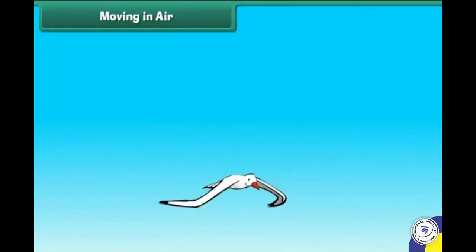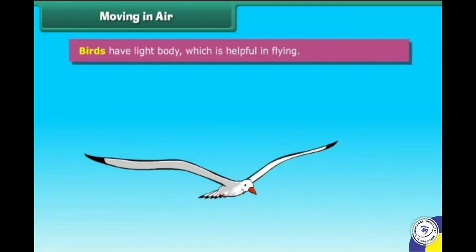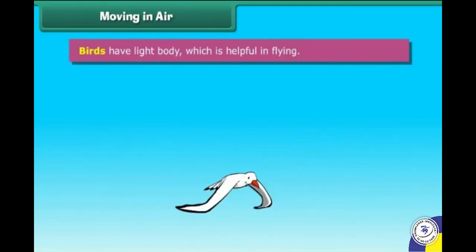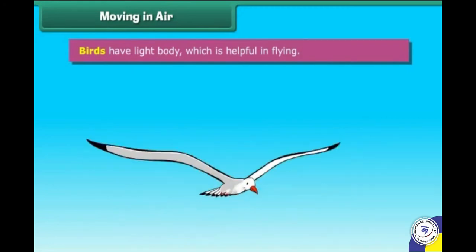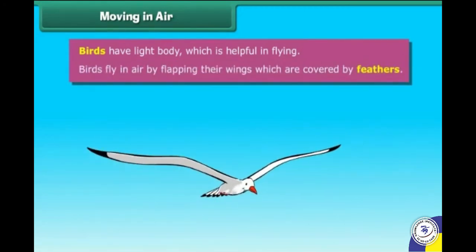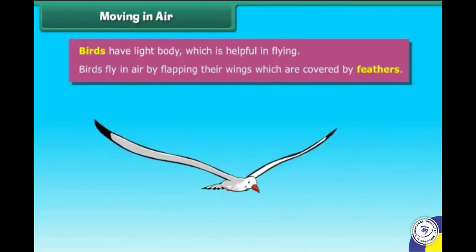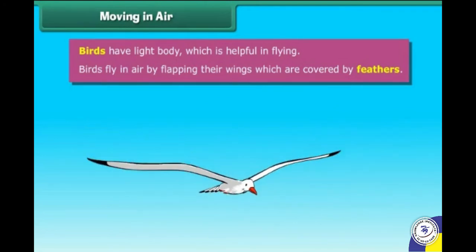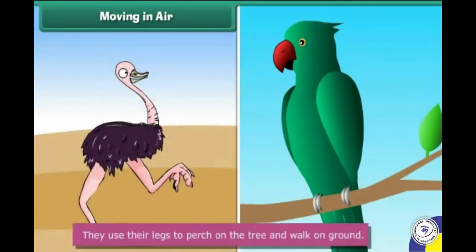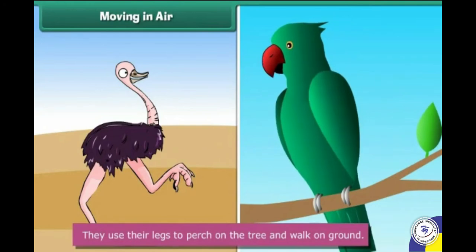Moving in air: birds have a light body which is helpful in flying. Birds fly in air by flapping their wings, which are covered with feathers. They use their legs to perch on trees and walk on the ground.